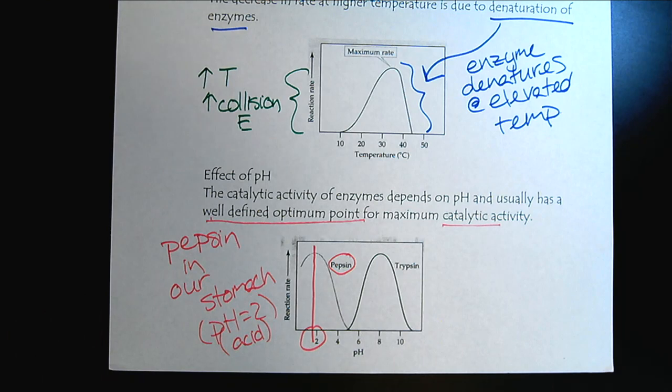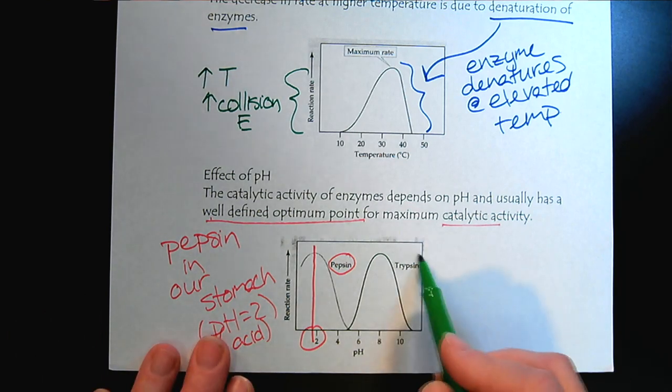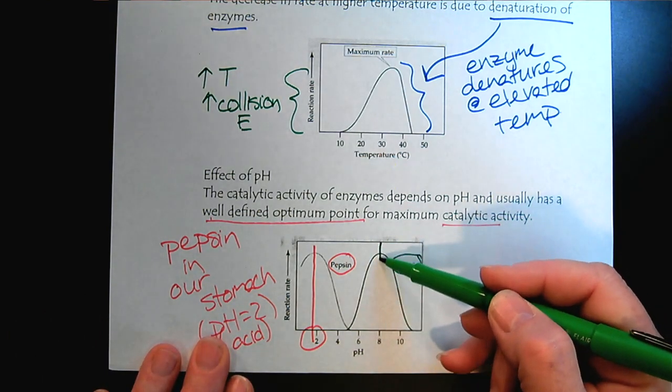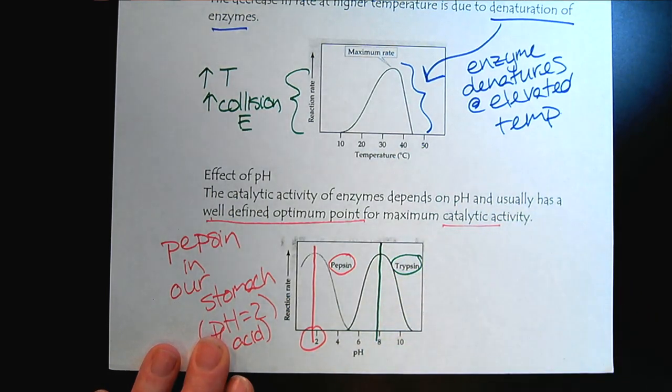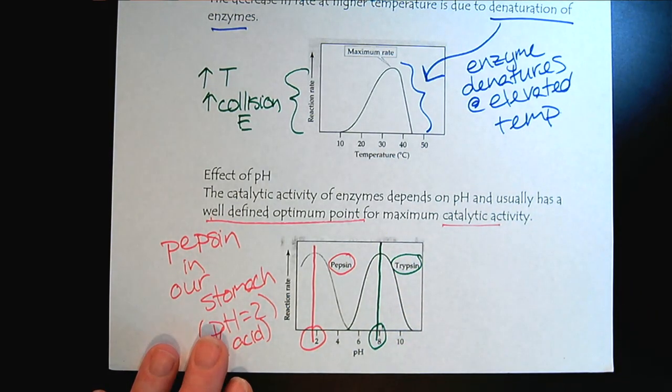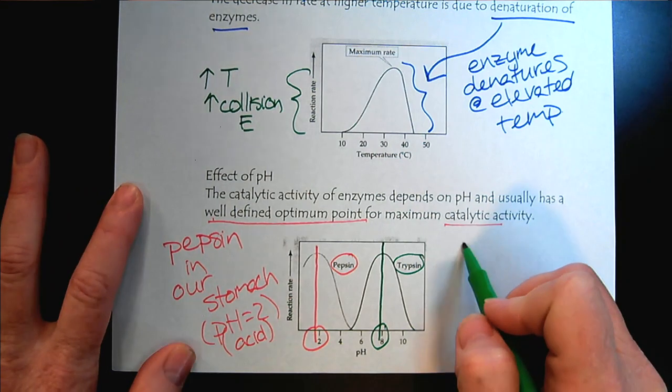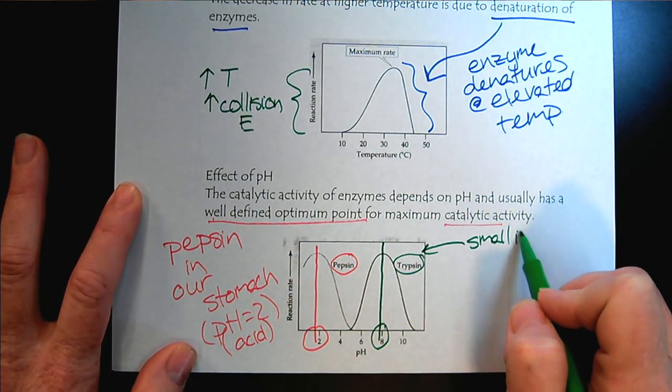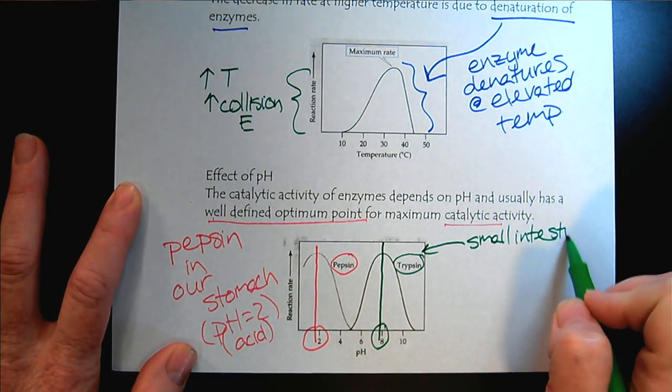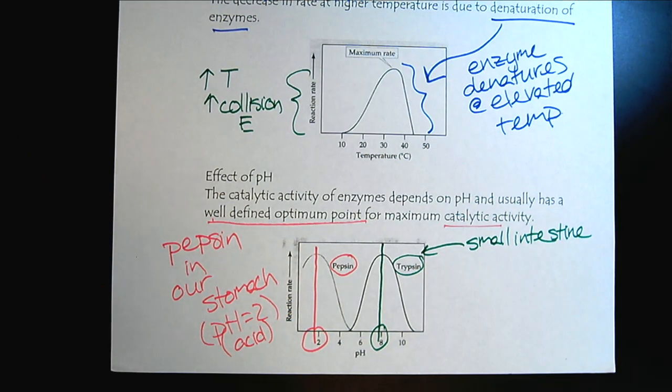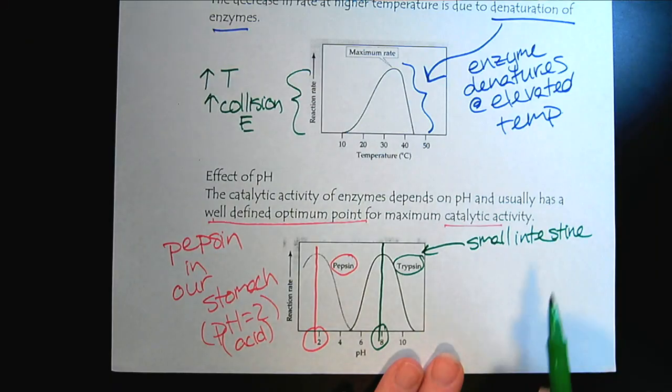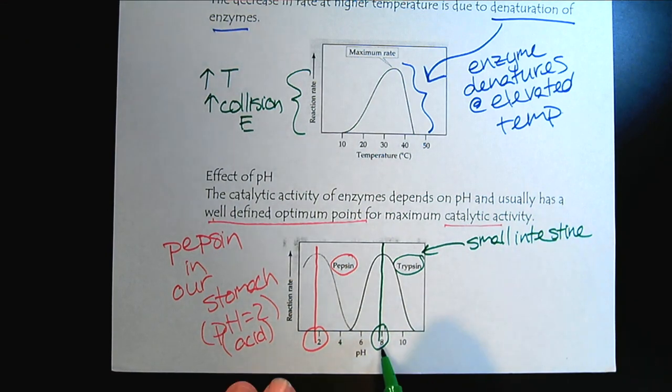Then conversely, let's look at trypsin. When we look at the enzyme trypsin, we can see that its maximum is very close to a pH of 8. So then if we think about in our body where we would find this more basic condition, trypsin we find in the small intestine. And it helps to digest various substances. So notice that the optimum pH is similar to the pH of the small intestine.